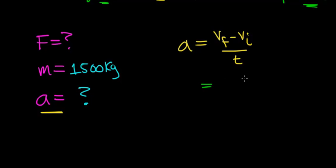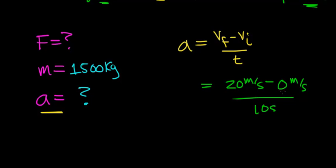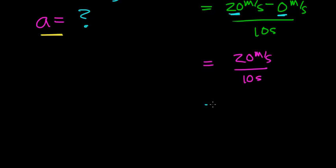In this case, they tell us that the final velocity of the car is 20 m per second, and this car initially started out at 0 m per second — that is, it started from rest. It's going to take 10 seconds to change this velocity, to go from rest to 20 m per second. Simplifying: 20 m/s minus 0 is 20 m/s, divided by 10 seconds, which gives 2 m per second squared.